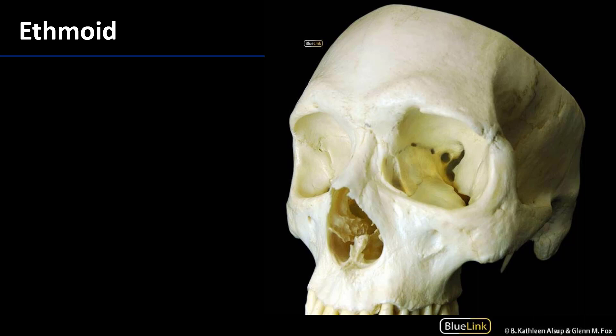And then finally we have the ethmoid bone. The ethmoid bone — I'm just going to follow it there — is a part of the medial wall of the orbit. The features I look to in order to identify the ethmoid bone are the anterior and posterior ethmoidal foramina, which are going to be between the orbit and the ethmoidal air cells and the nasal cavity deep to that. The ethmoid bone is sitting just posterior to the lacrimal bone, which I'm outlining here, and it is sometimes difficult to discern the difference between those two bones.